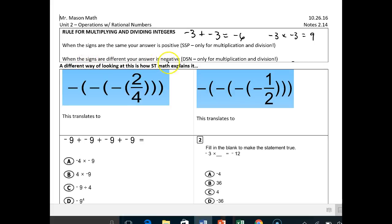When signs are different, your answer is negative. So different signs, only for multiplication and division, DSN, different signs negative. I could have something like negative 3 plus 5 that would give me positive 2, but negative 3 times 5 will give me negative 15.